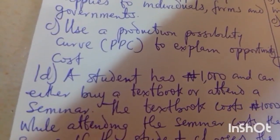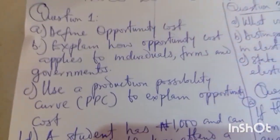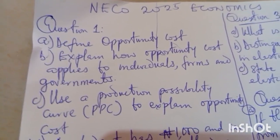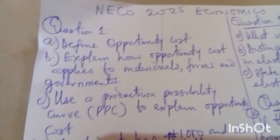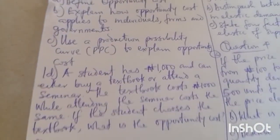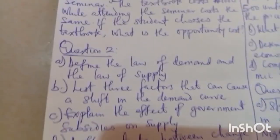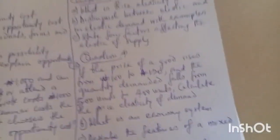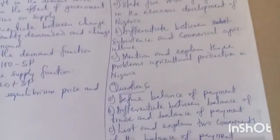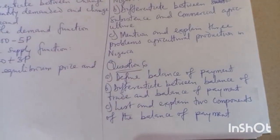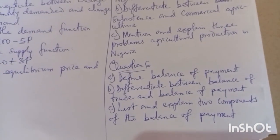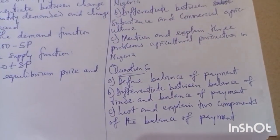In the exam, in section A you will be given two questions and you have to pick anyone. On the screen you can see question one, question two, question three, question four, question five, and question six. We are solving questions stopping at question six — we are only solving six questions here on this video.